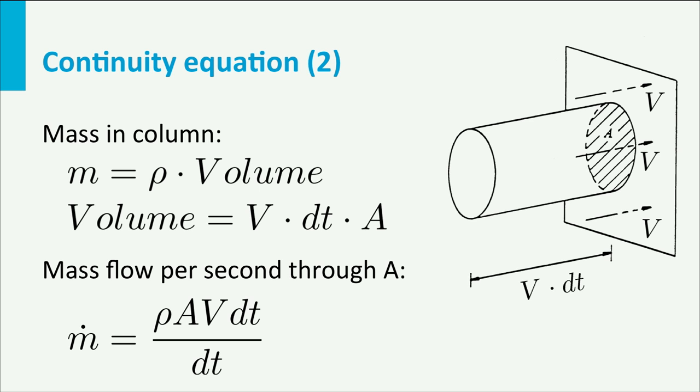The mass flow per unit of time is rho A V dt divided by dt. Since dt is both in the numerator and the denominator, we found that the mass flow per second is rho times A times V.